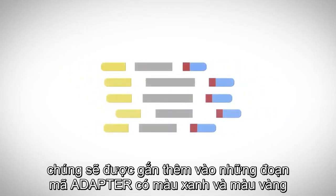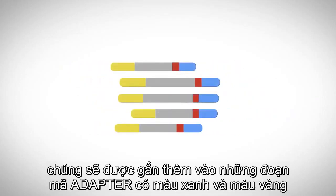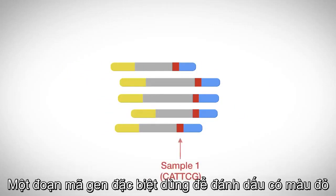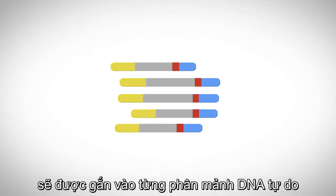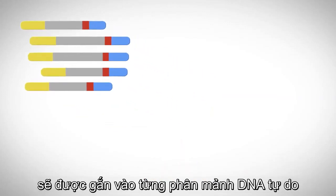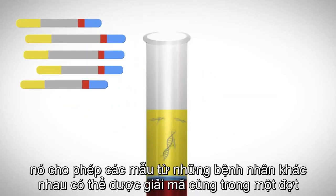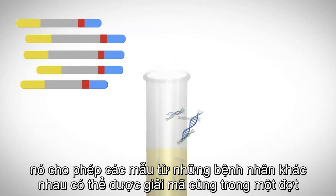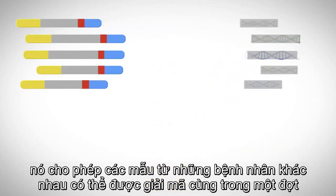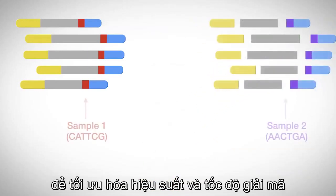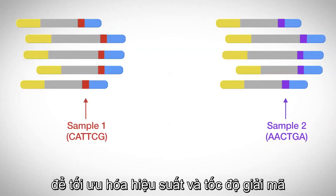In addition to universal sequencing adapters shown in yellow and blue, a sample-specific barcode, called an index, shown here in red, is attached to each cell-free DNA fragment. This allows samples from multiple patients to be sequenced together in a single batch for maximum speed and efficiency.